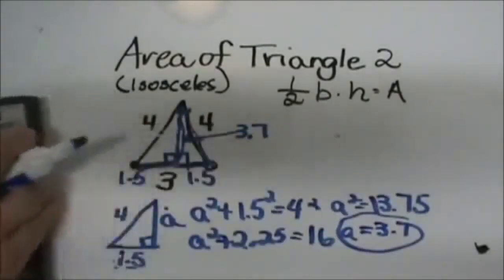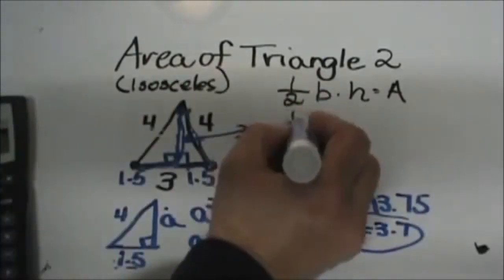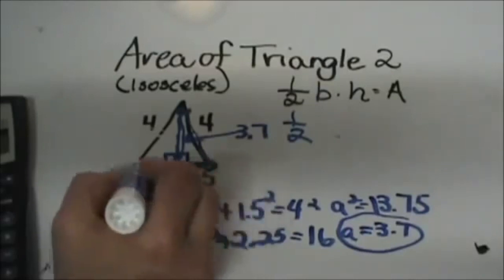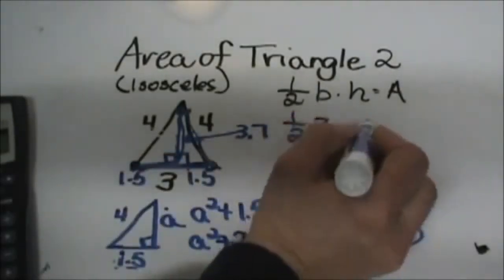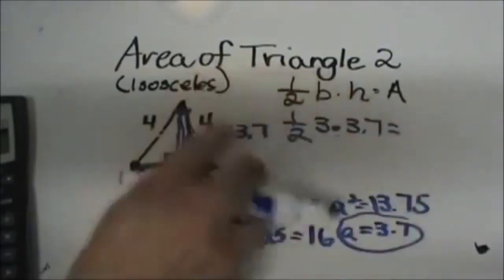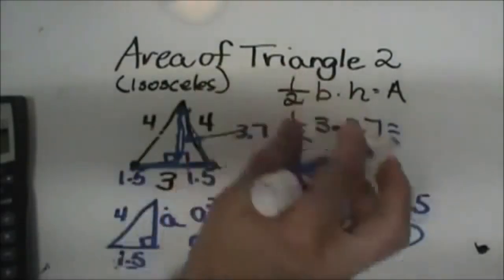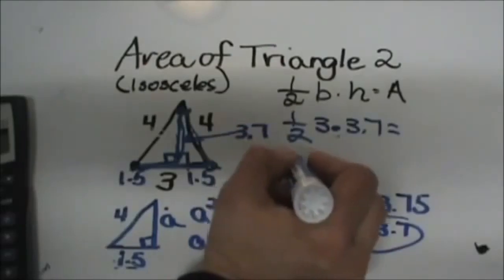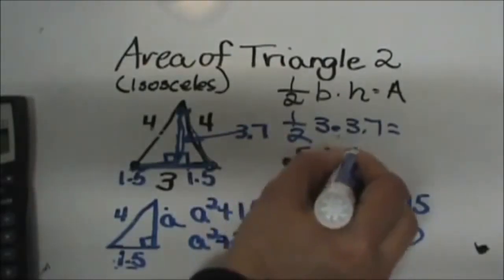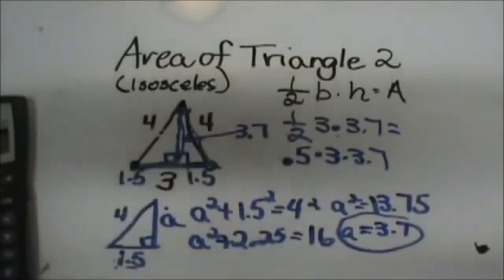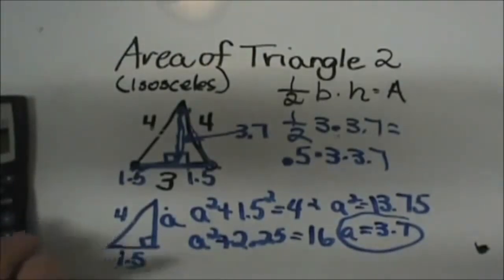So now I can go over here and plug it into 1/2 and then my original base was this whole side 3 times my height of 3.7, and I'm going to take my calculator and let's change half to a decimal. So that's going to be 0.5 times 3 times 3.7.